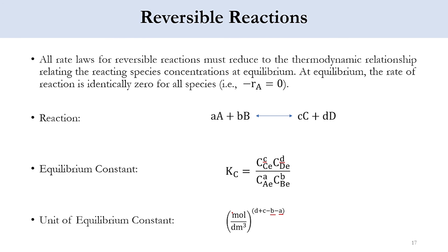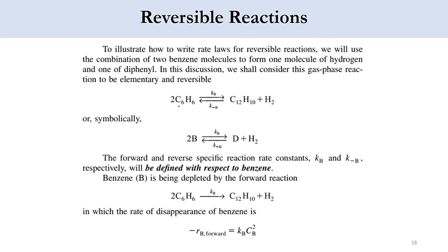We stop here and in the next lecture we will derive an expression for the reversible system, using the example of 2 moles of benzene (C6H6) converting to diphenyl (C12H10) and hydrogen. We will derive the equation and see how reversible reactions proceed for the gas phase system. Thank you so much for watching. Please like, share, and subscribe to the channel, and click the bell icon to get all updates. Stay tuned for more exciting videos.